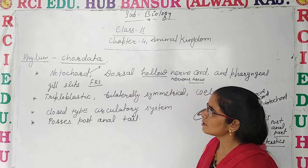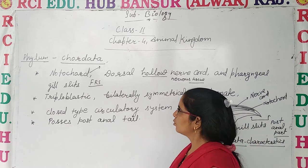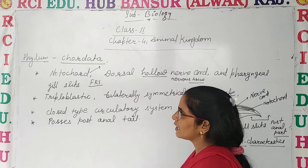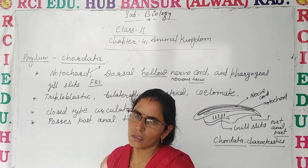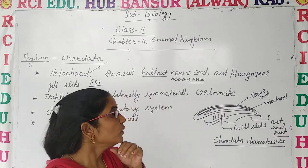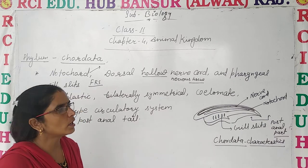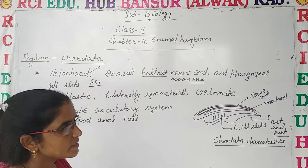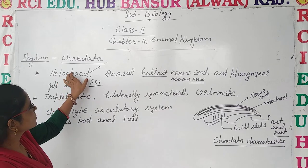Today, let's discuss about the phylum Chordata. Phylum Chordata has some peculiar features due to the presence of notochord, dorsal hollow nerve cord, and pharyngeal gill slits. Let's see notochord.